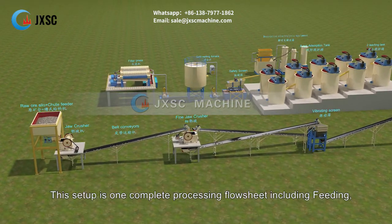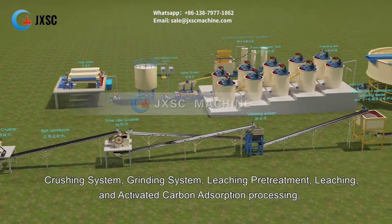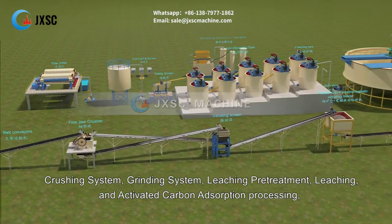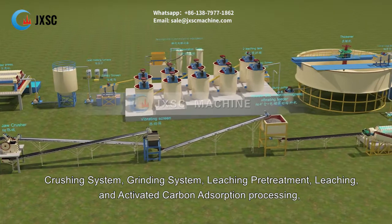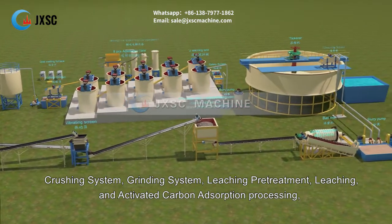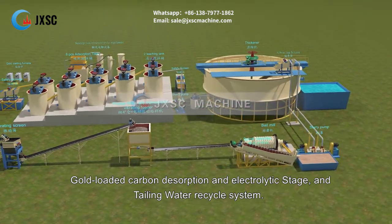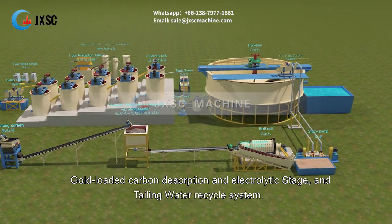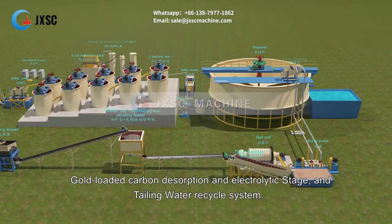This setup is one complete processing flowsheet including feeding, crushing system, grinding system, leaching pre-treatment, leaching, and activated carbon adsorption processing, gold-loaded carbon desorption and electrolytic stage, and tailing water recycle system.